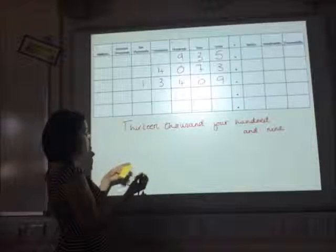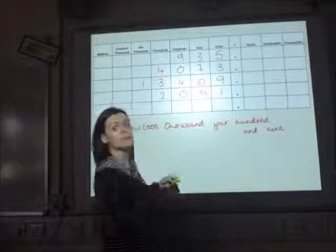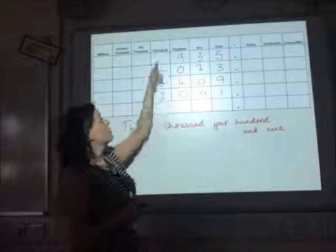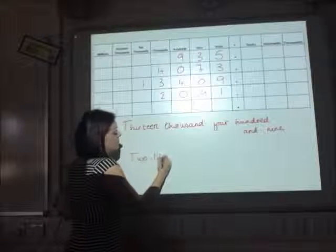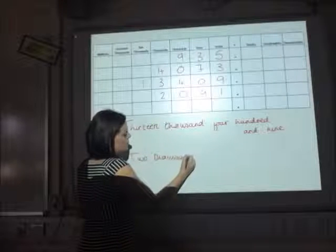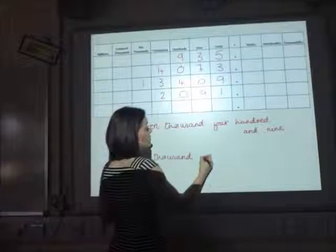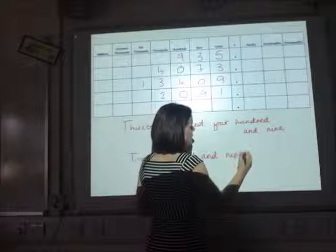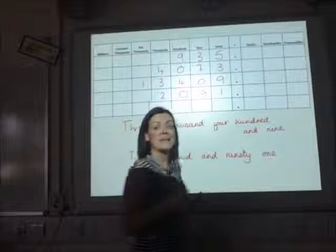And for the last one, we've got 2091, so we can see that that's 2 in the thousands column, so 2,000. I've got no hundreds this time, I've just got 91, so 2,000 and 91.